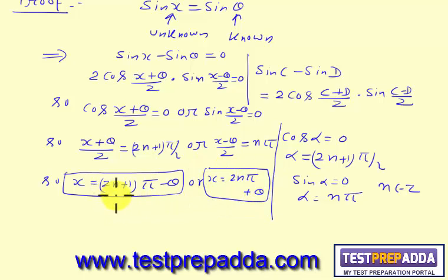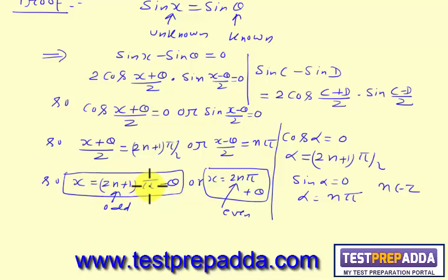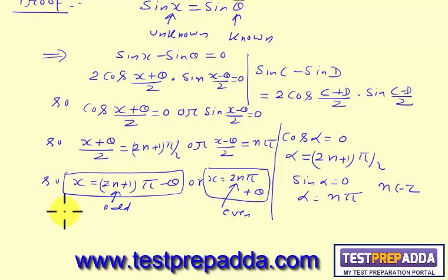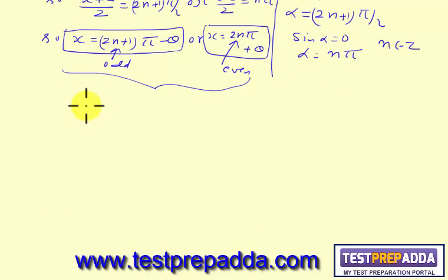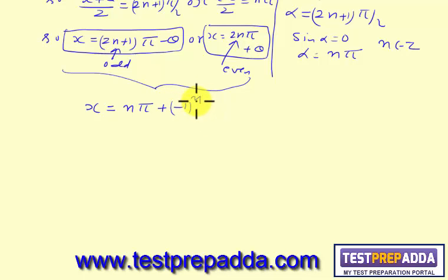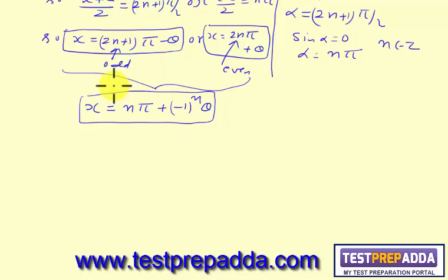Notice that (2n+1) is an odd number and 2n is an even number. So x equals an odd multiple of π minus θ, or x equals an even multiple of π plus θ. Combining these two results, we can write x = nπ + (−1)ⁿθ.